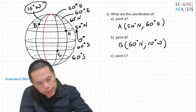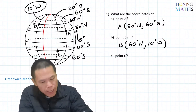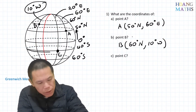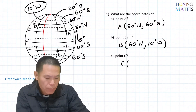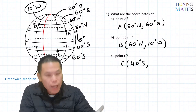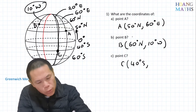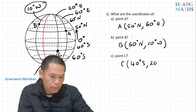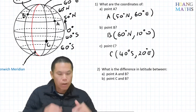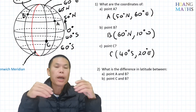For point C, latitude first: it's 40 degrees south because this latitude is 40 degrees south. The longitude is 20 degrees east of the Greenwich meridian. So point C is 40°S, 20°E.